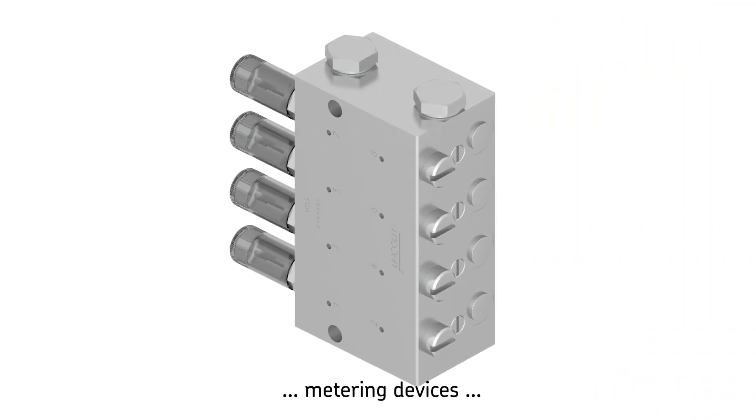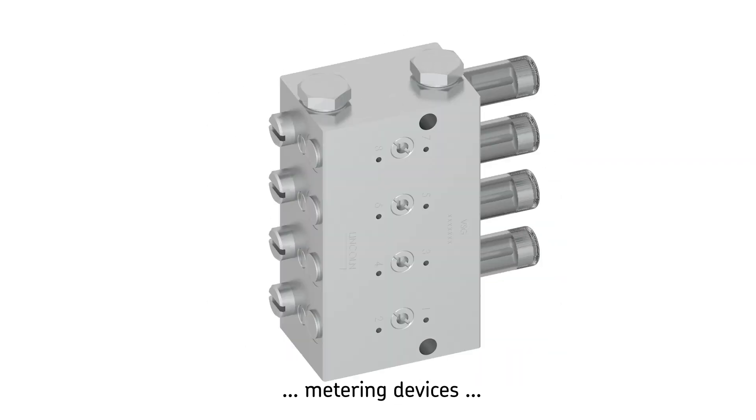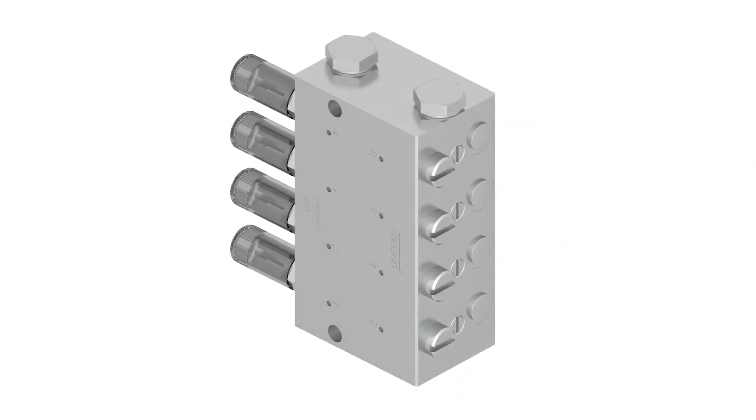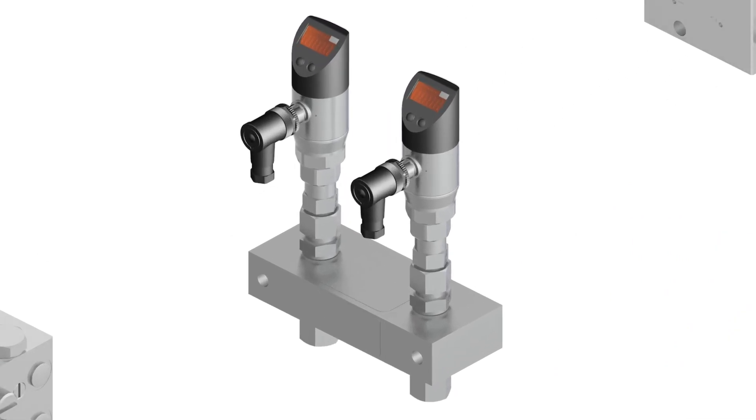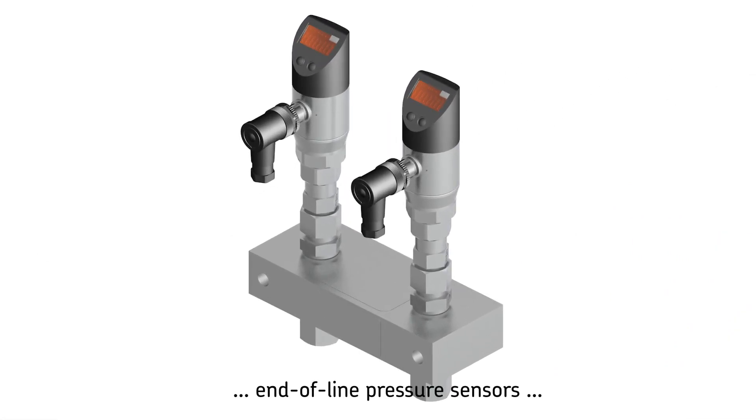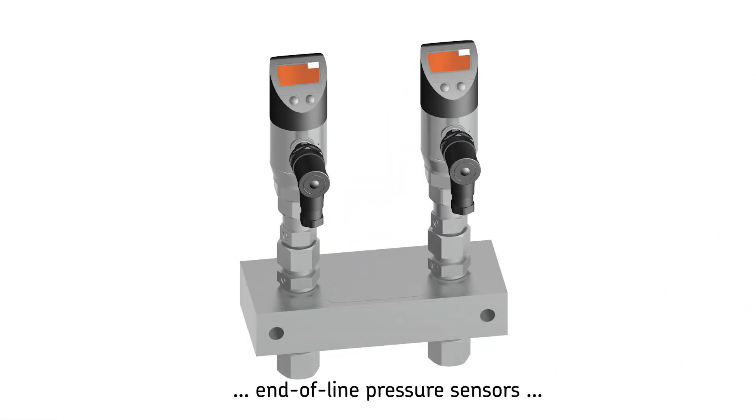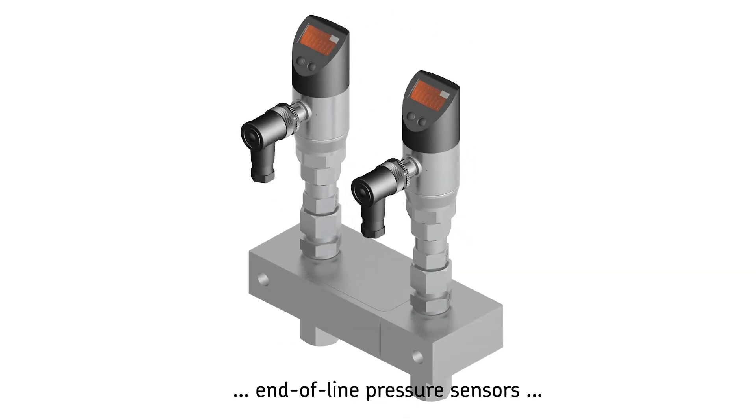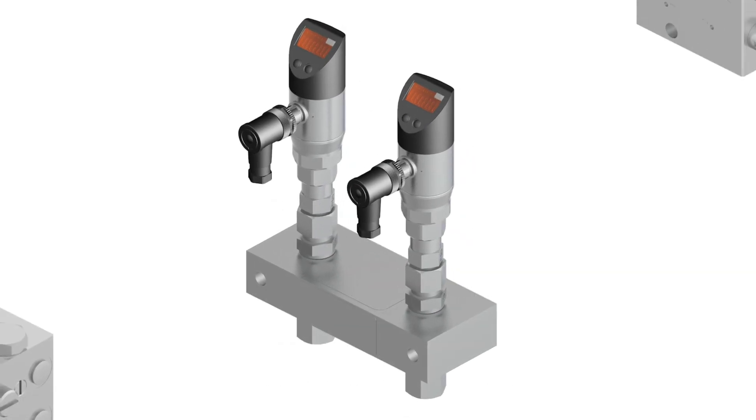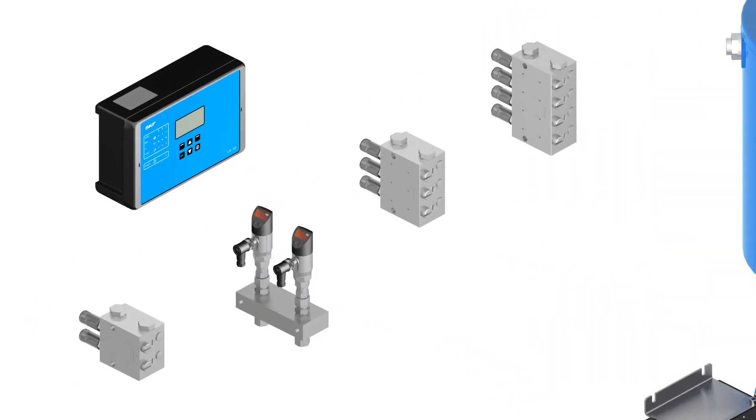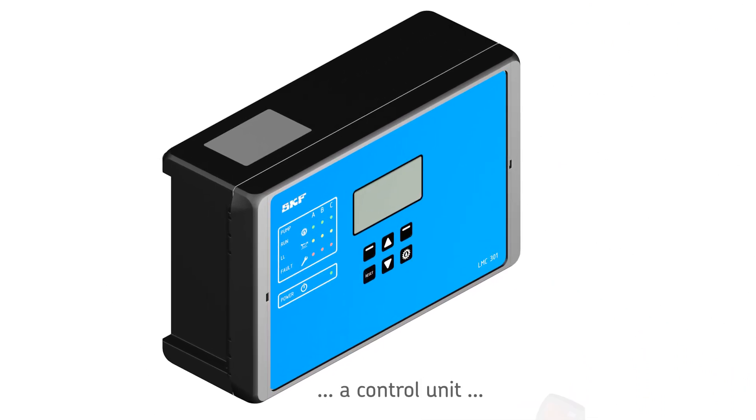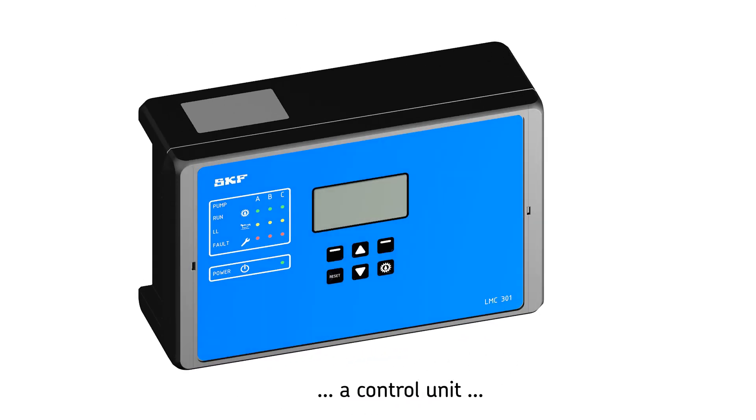The system includes dual-line metering devices with piston sensors similar to the VSG, end-of-line pressure sensors like EDW or similar products, and a control unit similar to the LMC 301.